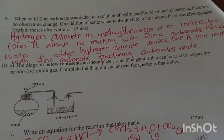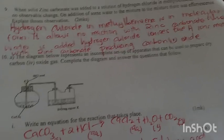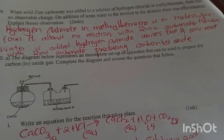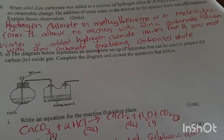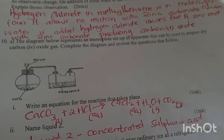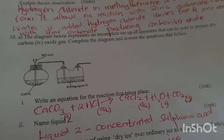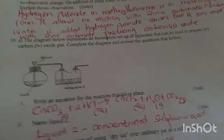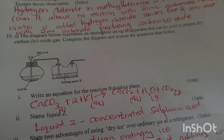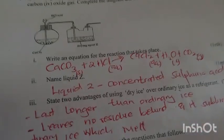When solid zinc carbonate was added to a solution of hydrogen chloride in methyl benzene, there was no observable change. On addition of water to the mixture, there was effervescence. Explain. Hydrogen chloride in methyl benzene is non-polar so no reaction takes place with zinc carbonate. But when water is added, hydrogen chloride ionizes to form hydrogen ions which react with the zinc carbonate, producing carbon dioxide.